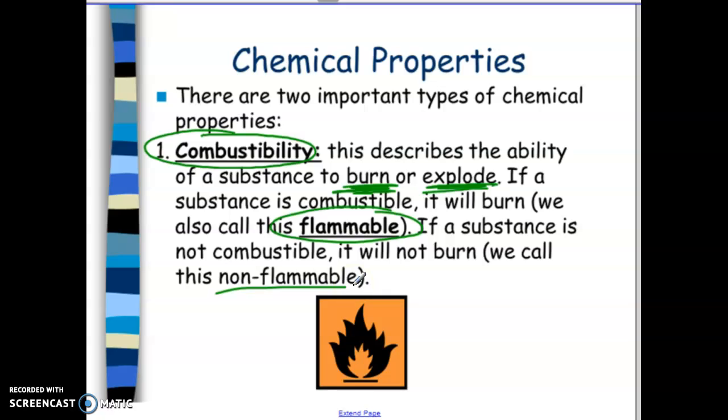So for example, water is non-flammable, but paper is flammable. So by saying paper has the ability of burning, that's describing its chemical property. It has the ability to be set on fire, but not everything does.